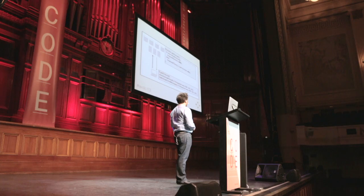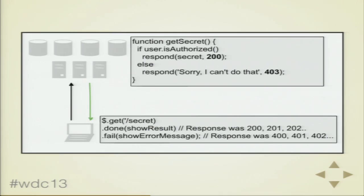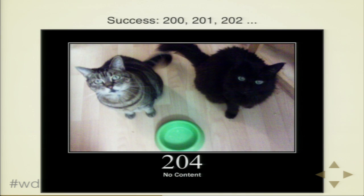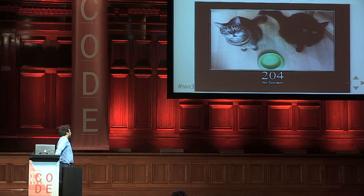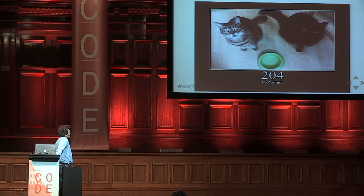If you were writing something lower-level — with mobile apps, command line apps, or a more complex single-page app — you will probably have to look at those header codes and do something different depending on what code came back. And there's a really cool project called HTTP Status Cats that is the best way to learn all these response codes — loads of examples.